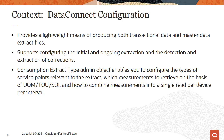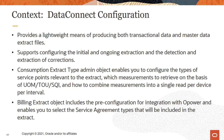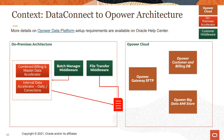The C2M consumption extract type admin object enables you to configure the types of service points relevant to the extract, which measurements to retrieve based on UOM, TOU, SQI, and how to combine measurements into a single read per device per interval. The billing extract object includes the pre-configuration for integration with Opower, and enables you to select the service agreement types that will be included in the extract. With C2M on-premises, the data accelerators produce a file sent through the Opower gateway SFTP and stored in the Opower customer and billing database or Big Data AMI store. DSS energy management widgets read from Opower cloud to display insights to customers through the DSS portal.